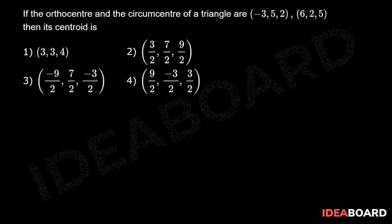If the orthocenter and the circumcenter of a triangle are (-3, 5, 2) and (6, 2, 5), then its centroid is: